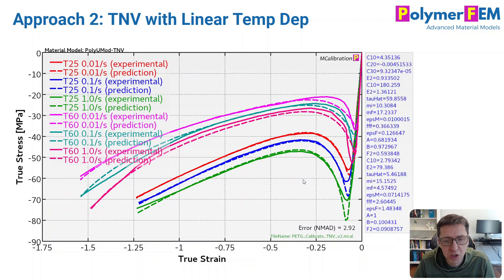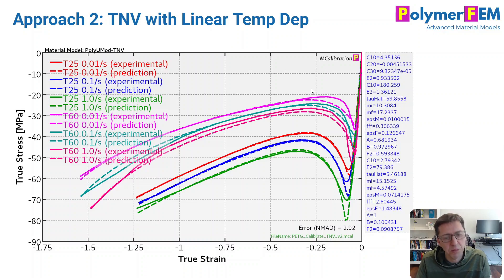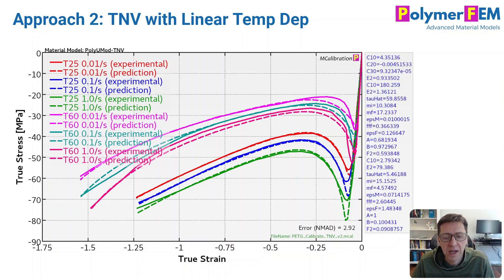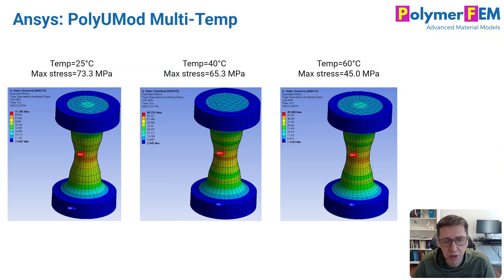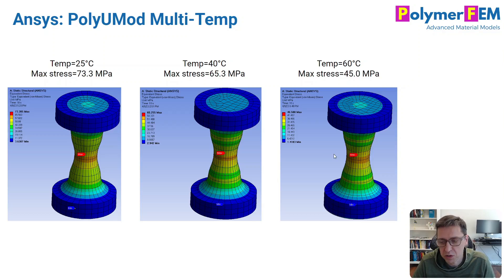In my example, I'm going to use a linear temperature dependence equation in the TNV model. So I have only one set of parameters, but some parts of the model are now temperature-dependent based on the selected equation. I calibrate it all together and get a good fit to the data. I can then simulate this in ANSYS by plugging in this TNV model with equation-based temperature dependence, and I get results at the three different temperatures I studied earlier.